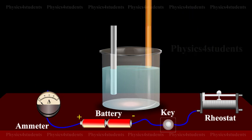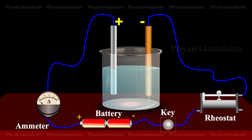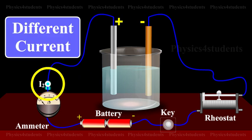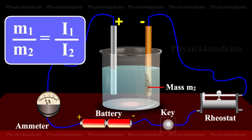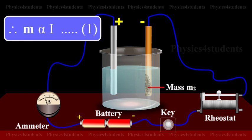The cathode is re-inserted in the cell and a different current I2 is passed for the same time T. The mass M2 of the deposit is obtained. It is found that M1 by M2 is equal to I1 by I2. Therefore, M directly proportional to I. This is equation number 1.